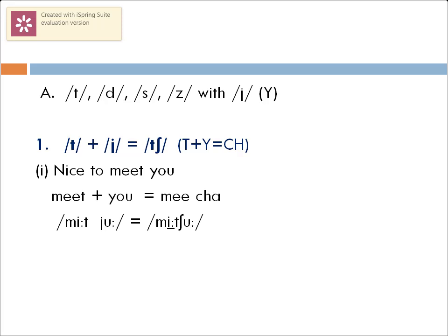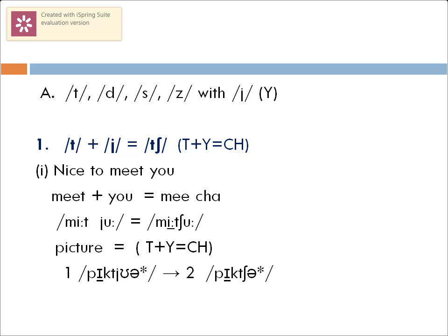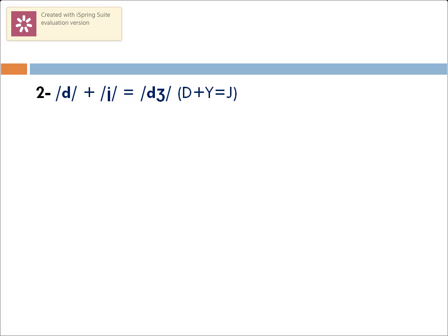Similarly, observe the word 'picture.' Inside the word, we have the sounds /t/ and /j/ adjacently placed, and suddenly it's not 'pic-ture' but 'picture,' where /t/ and /j/ combine to give us a new sound /tʃ/.